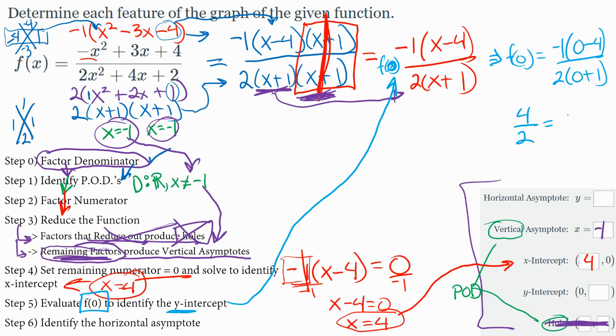And so that works out to be a 4 divided by 2 is 2. And so my y-height, when x is 0, is 2, which means my y-intercept is 0 comma 2 because I plugged in 0 and got 2 as my output.